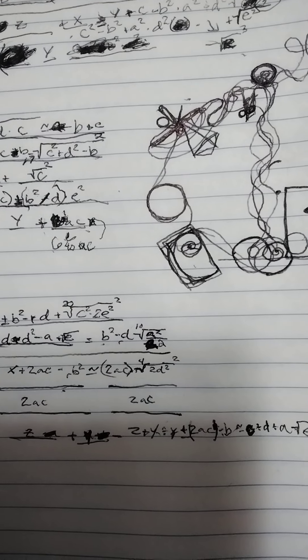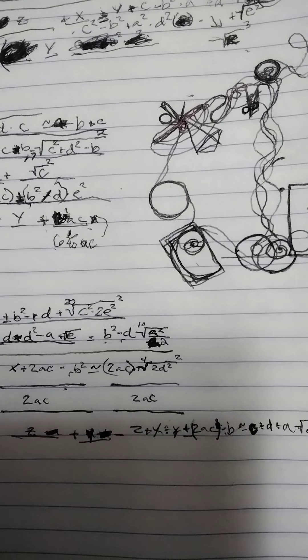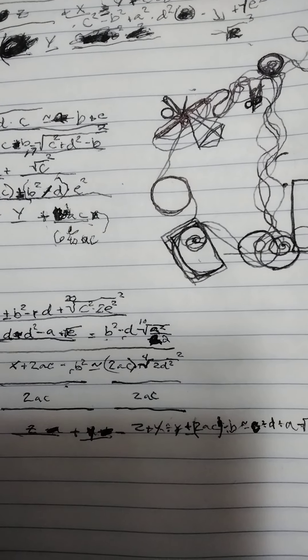Okay, so this bottom equation doesn't have anything but z plus y minus z plus x divided by y, which cancels out everything but x and y.